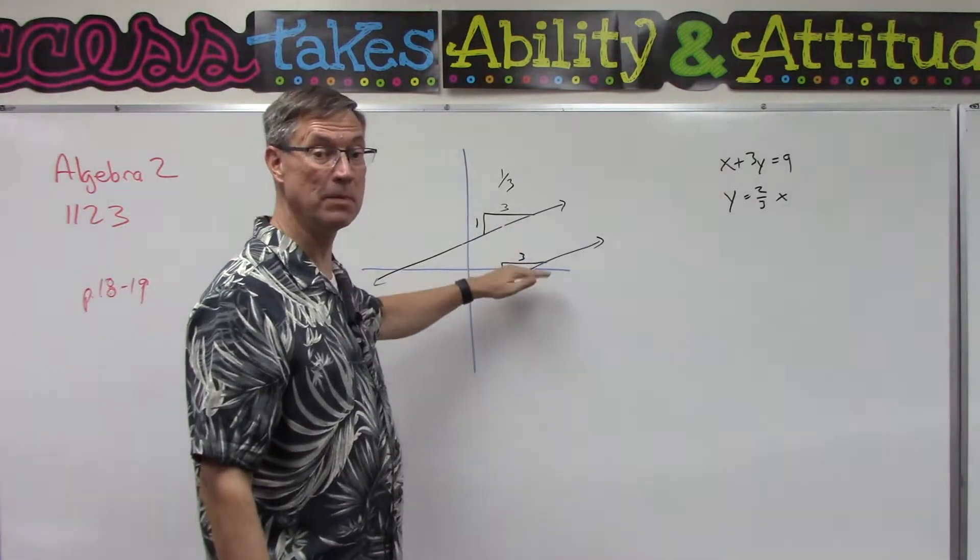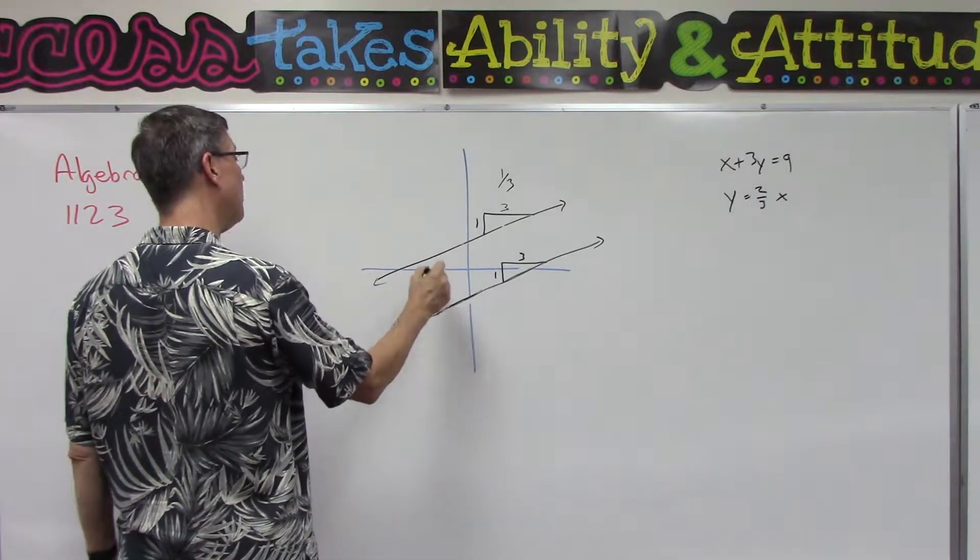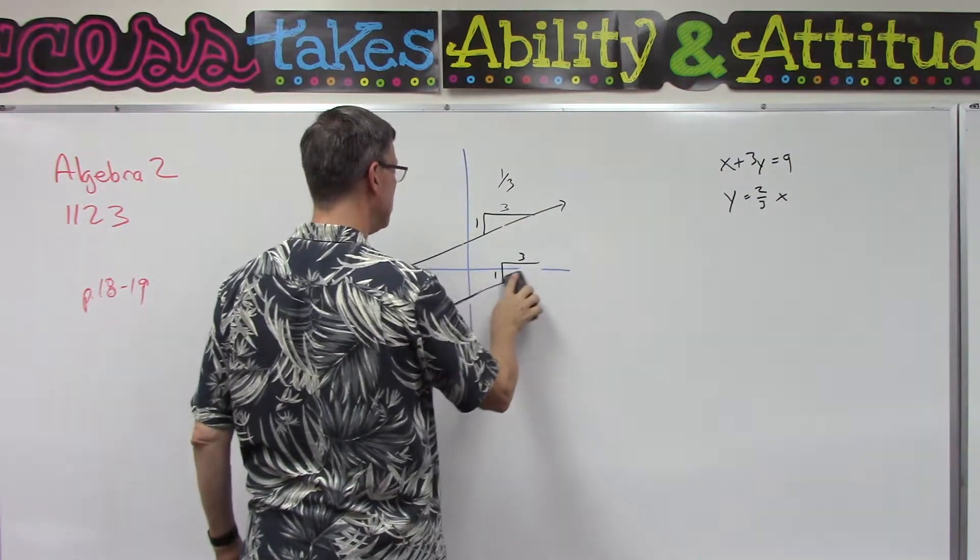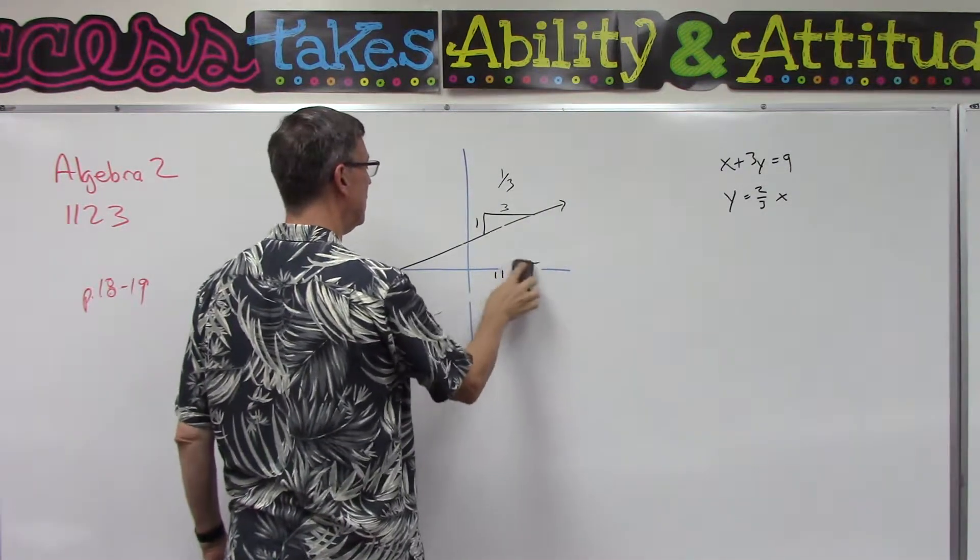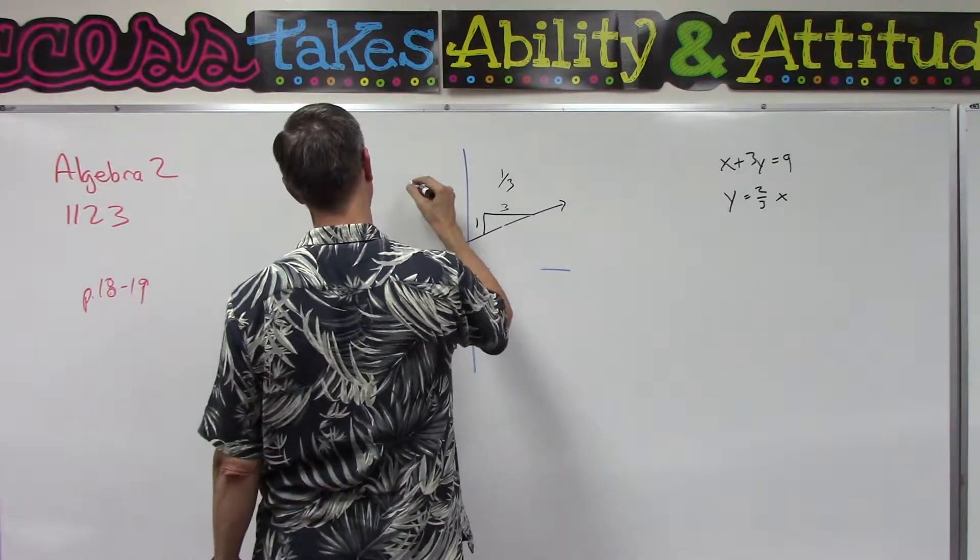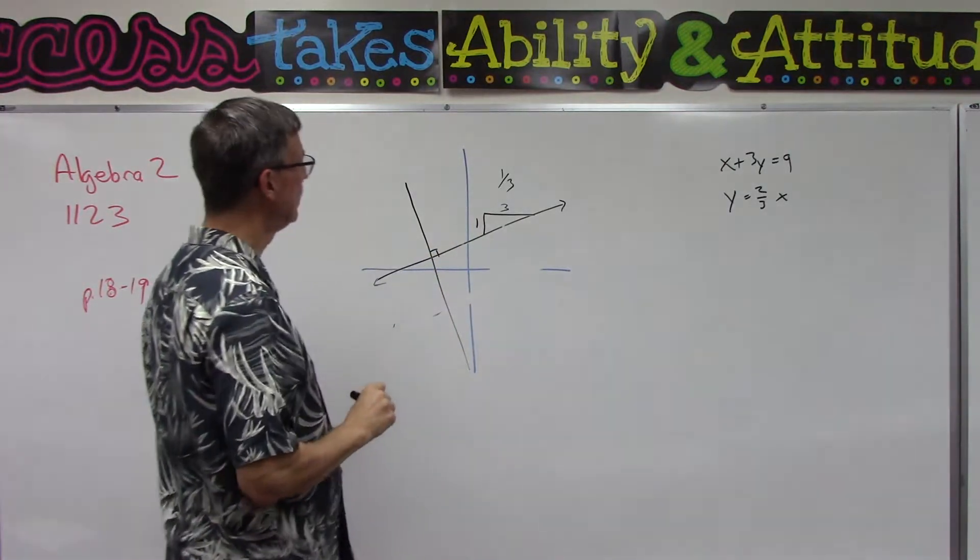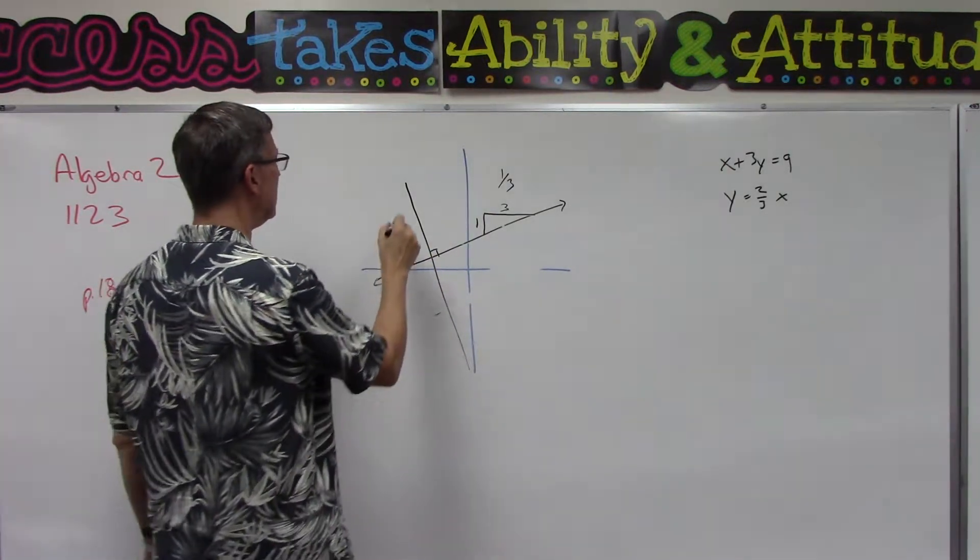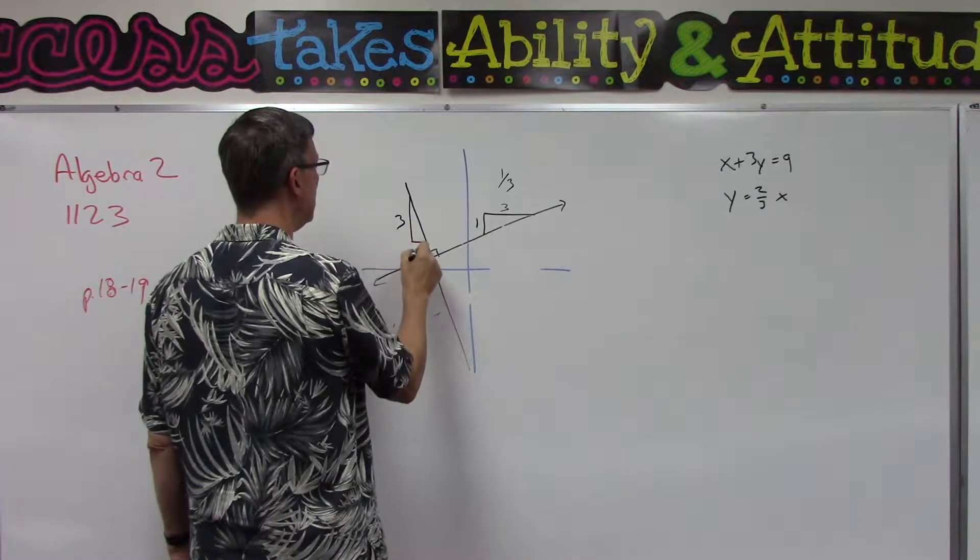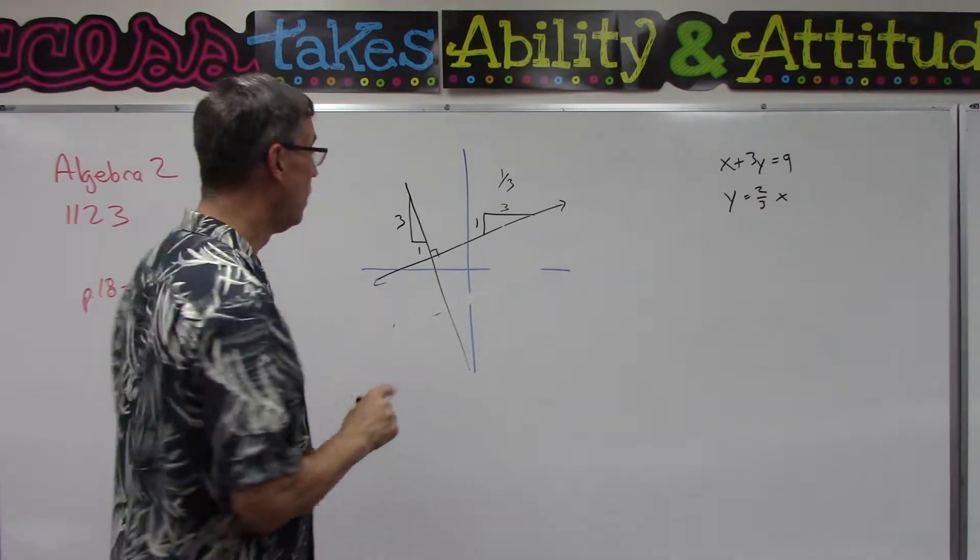If I have a perpendicular line, so let me erase this one, and let's say I draw a line perpendicular to this one so it goes that direction, so forms a right angle there.